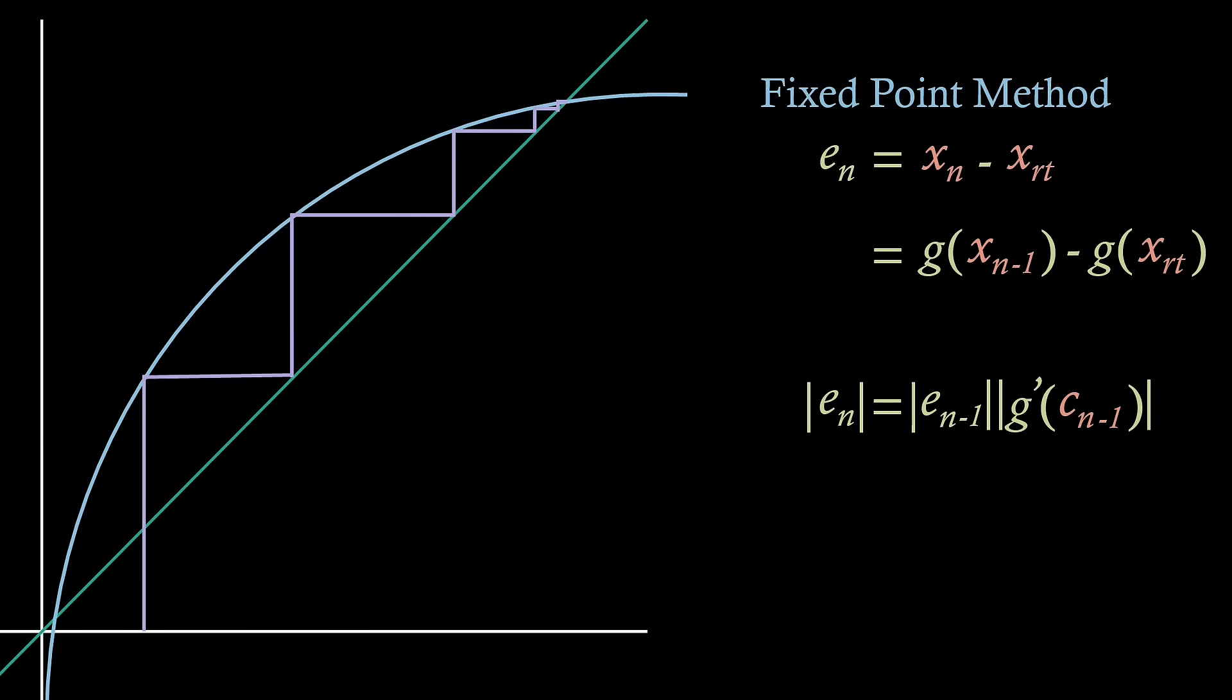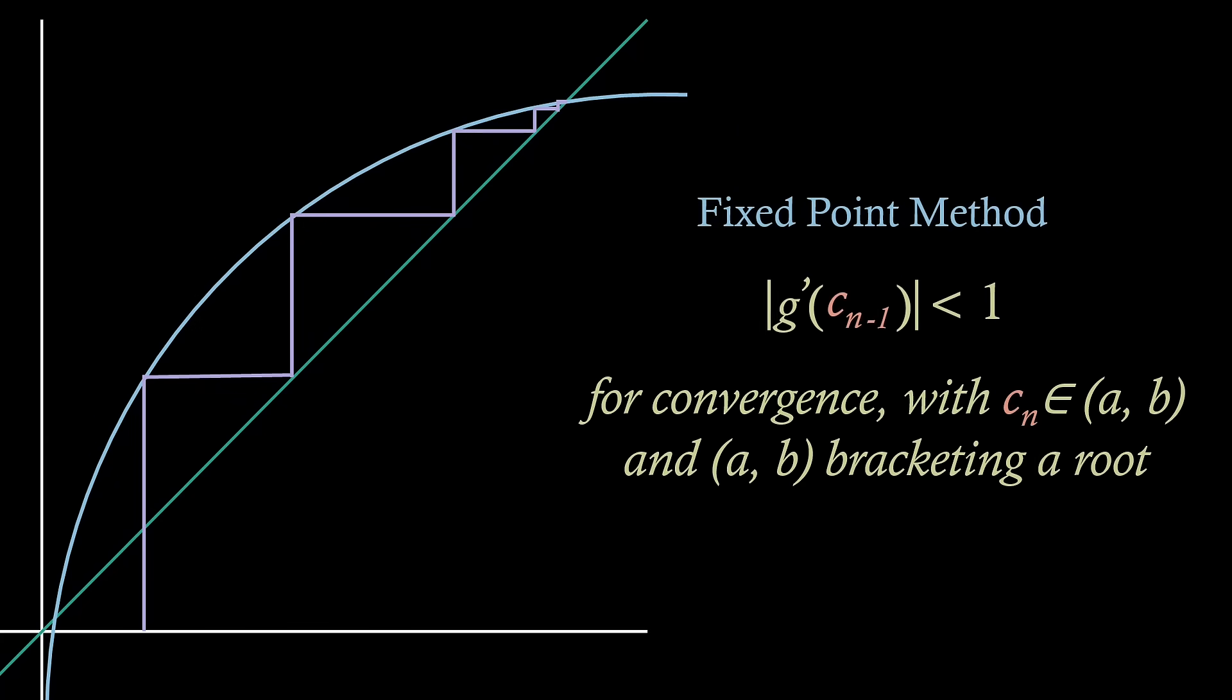We now use this to define the convergence criteria of the fixed point method. Hence, we need the absolute value of g dash cn to be less than 1, with cn being all values within a bracket ab surrounding the root, which makes sense for the function g of x equals cos x that we had earlier, where we can verify that in the bracket ranging from 0.7 to 0.8, where our root lies, the absolute value of g dash is always less than 1.